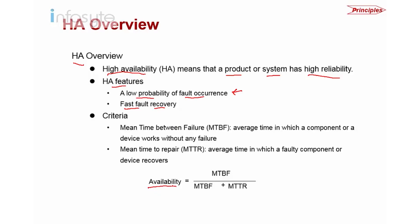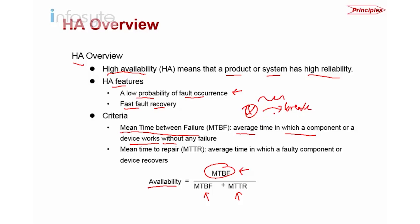To calculate availability, the formula is: MTBF divided by (MTBF plus MTTR). MTBF means Mean Time Between Failure — the average time a component or device works without any failure. MTTR, or Mean Time To Repair, is the average time for a fault component or device to recover — measuring how long it takes to do a recovery.